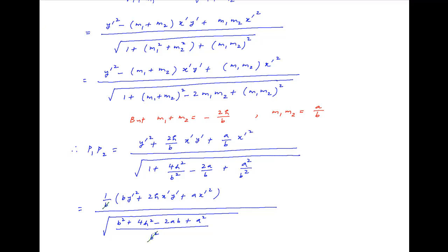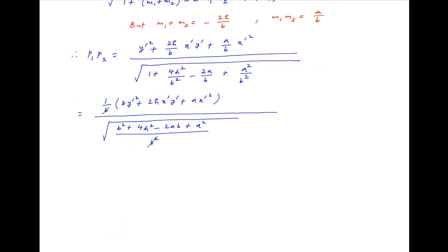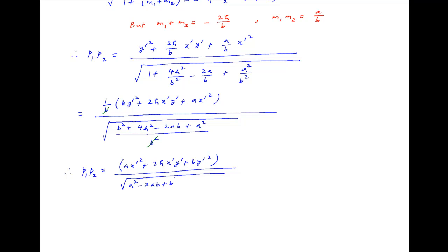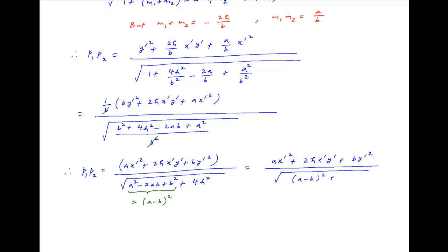1 upon b cancels across the numerator and the denominator, and therefore p1 times p2 is equal to ax dash squared plus 2h times x dash y dash plus b times y dash squared, divided by the square root of a squared minus 2ab plus b squared plus 4h squared. This can also be written as ax dash squared plus 2h times x dash y dash plus b times y dash squared divided by the square root of a minus b whole squared plus 4h squared, and this is the required result.